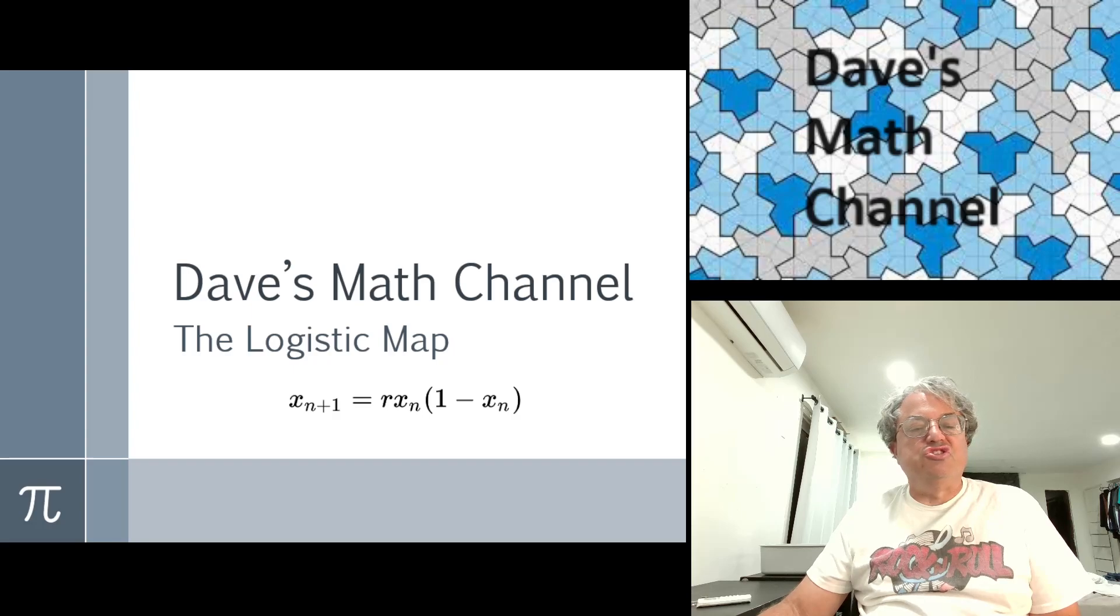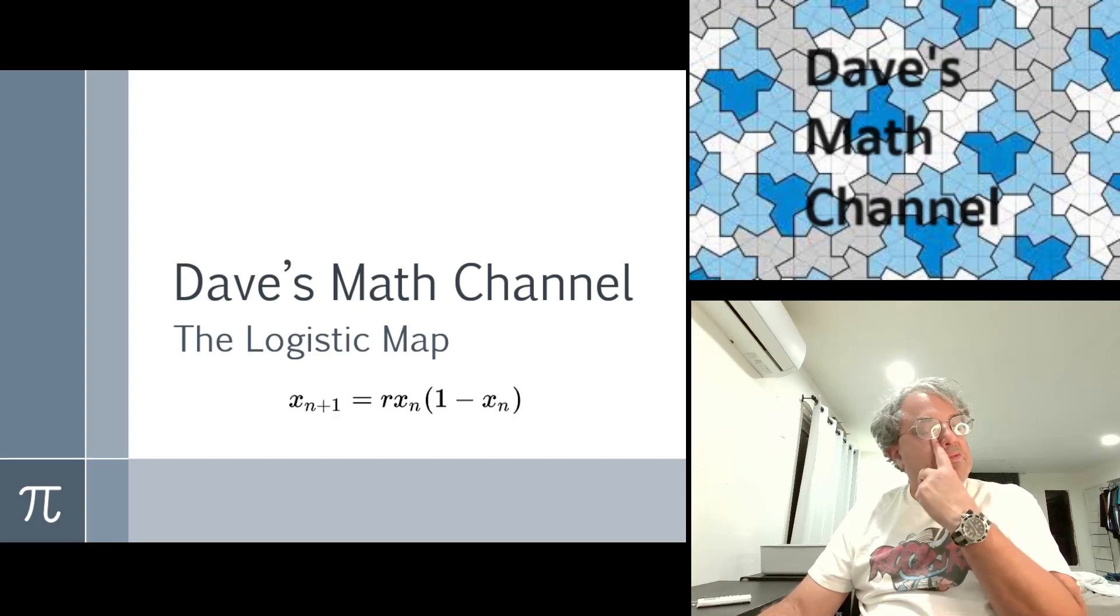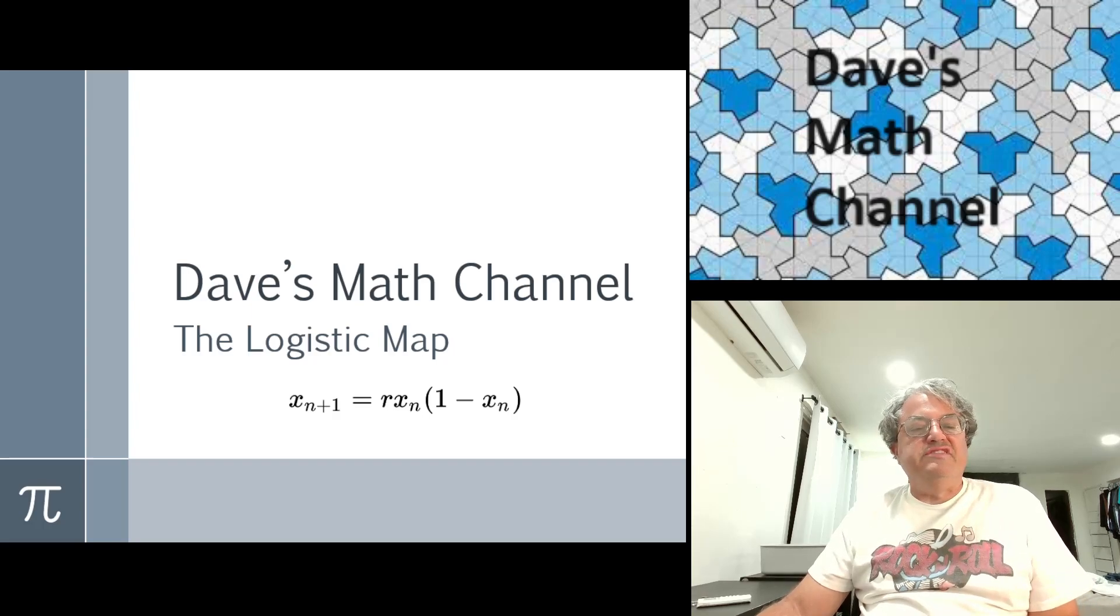So here's the logistic map. I wrote down the equation at the bottom of this slide: x_n+1 = R*x_n*(1 - x_n). That might look like a lot, but it's really not that complicated. R turns out to be a real number between 0 and 4, and x_n is just a sequence of real numbers. You can start with x_0 any value you want, strictly between 0 and 1. It's usually good to start with 0.5.